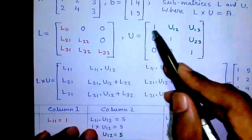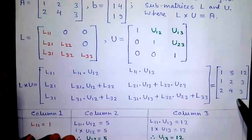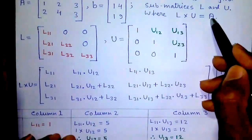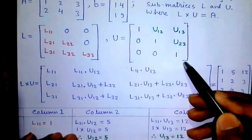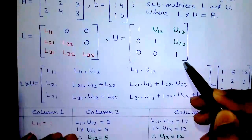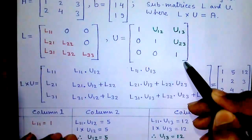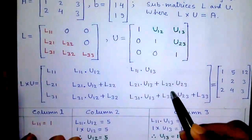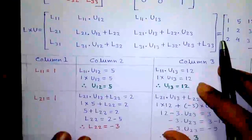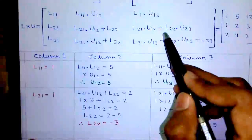If you multiply matrix L into matrix U, you will get a matrix equal to our matrix A because of this formula. This is the simple matrix multiplication process. If you don't know matrix multiplication, please watch my previous video on LU decomposition by Crout's method where I have explained it very easily. By the relation of L into U with matrix A, we will find out individual L and U values.